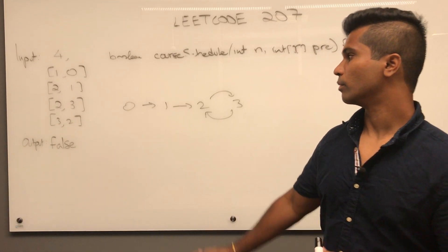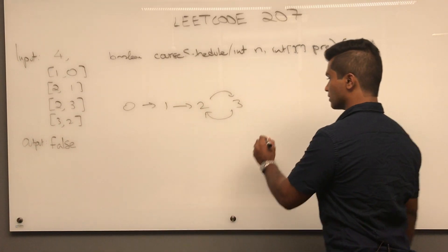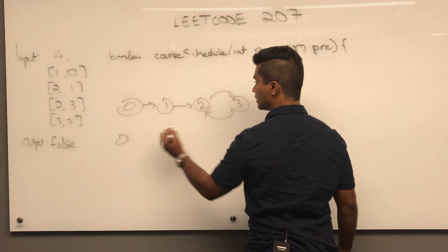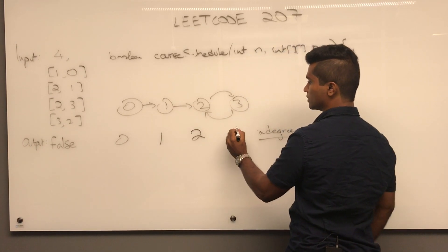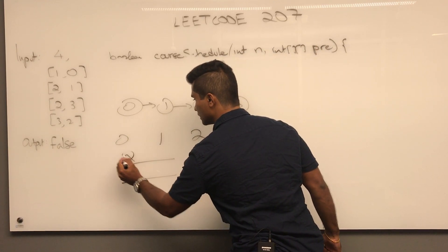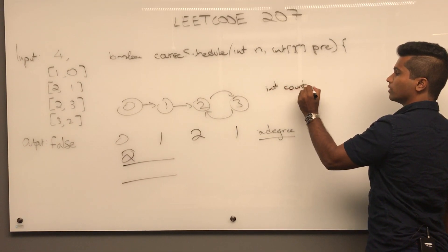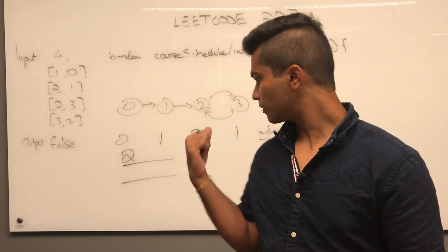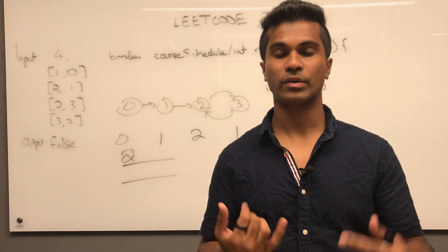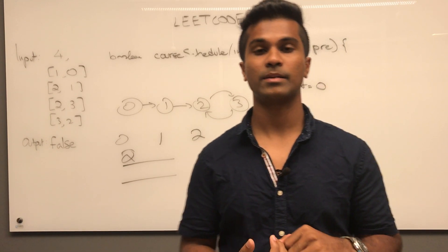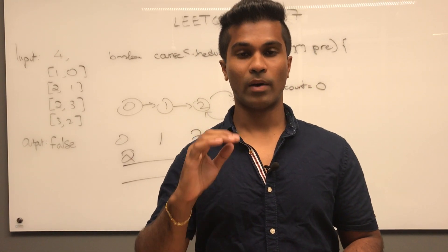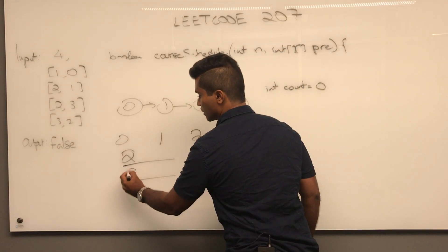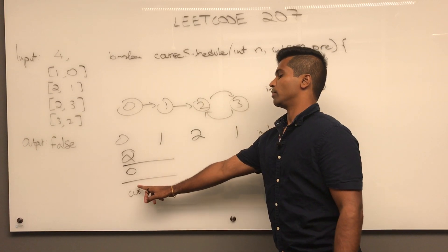Before the code, I'll walk through the intuition and how the queue gets filled and how in-degrees change. We'll track a variable called count, which counts all nodes popped from the queue whose in-degree is zero. We create an adjacency list, track in-degrees for each node, then push every node with in-degree zero into our queue — in this case we push zero.